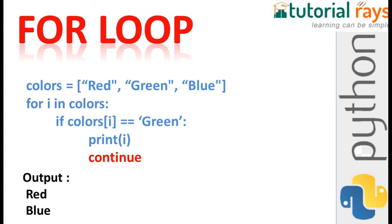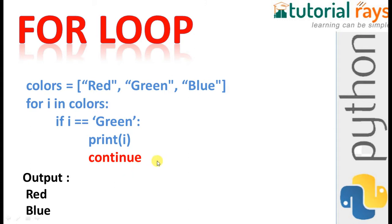Using the same example — colors: red, green, blue — for i in colors, if i equals equals green, then continue. That means it will skip green and show the rest of the colors. So it will display red and blue but not green, because if the value of i equals green it continues, skipping that element. This is useful when you have an array and want to skip a particular value.